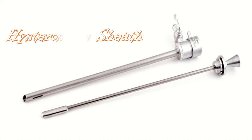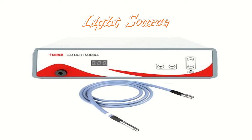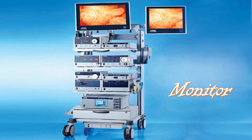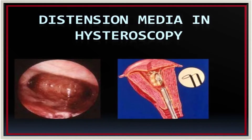The second part is the hysteroscope sheath, consisting of an inner sheath and outer sheath with obturator. The next part is the camera and stack system — the hysteroscopic image is visualized on a monitor with the help of a camera connected to a camera drive unit. The light source requires a minimum power of 150 watts to obtain a clear image. Other parts include the monitor and image rotating equipment, and finally the distension medium.